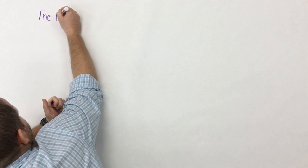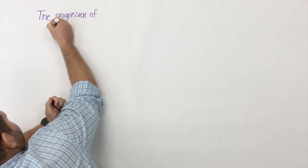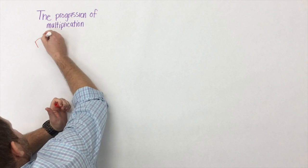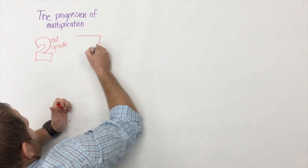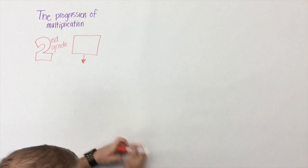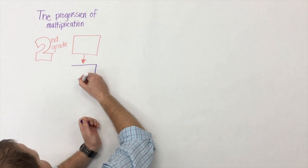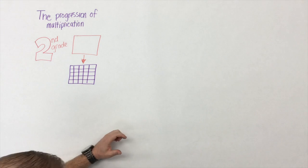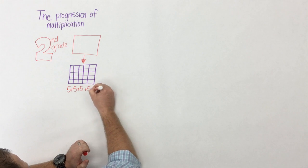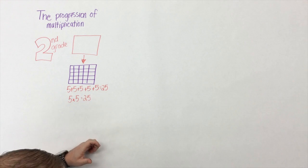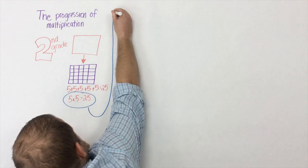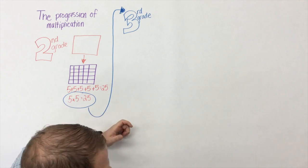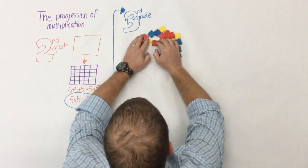Here's my attempt to explain the progression of multiplication. Most of us might think it starts in third grade, but in actuality it starts in second grade, where students are expected to take a square or a rectangle and partition it into no more than five rows or five columns. Here the understanding of repeated addition is established — five plus five plus five plus five plus five is 25.